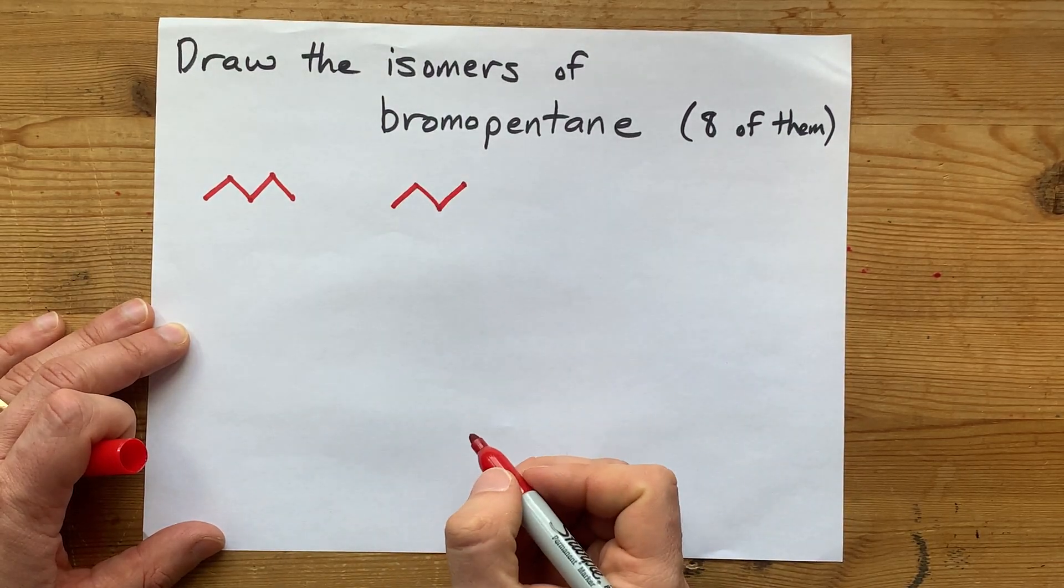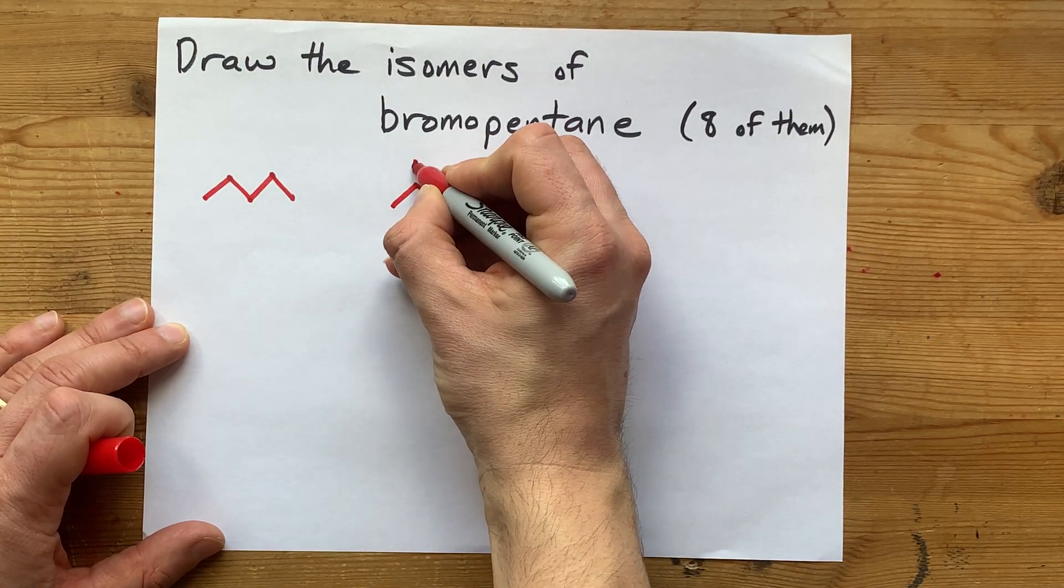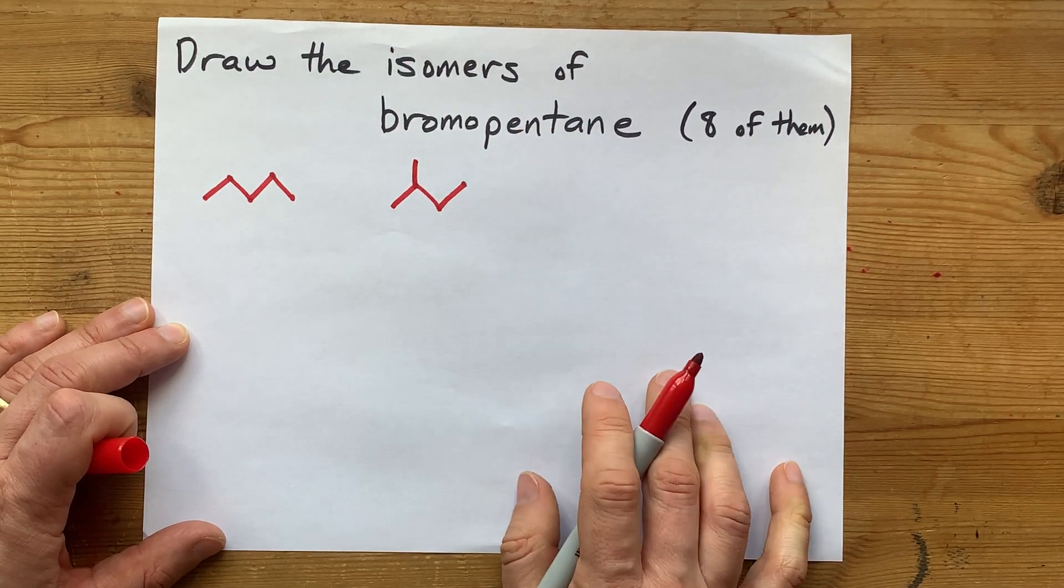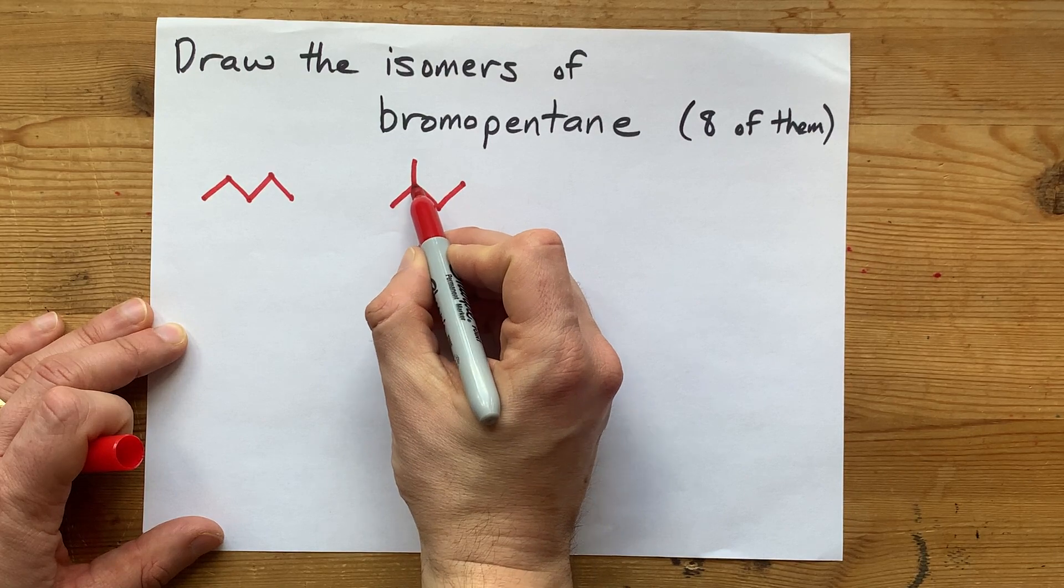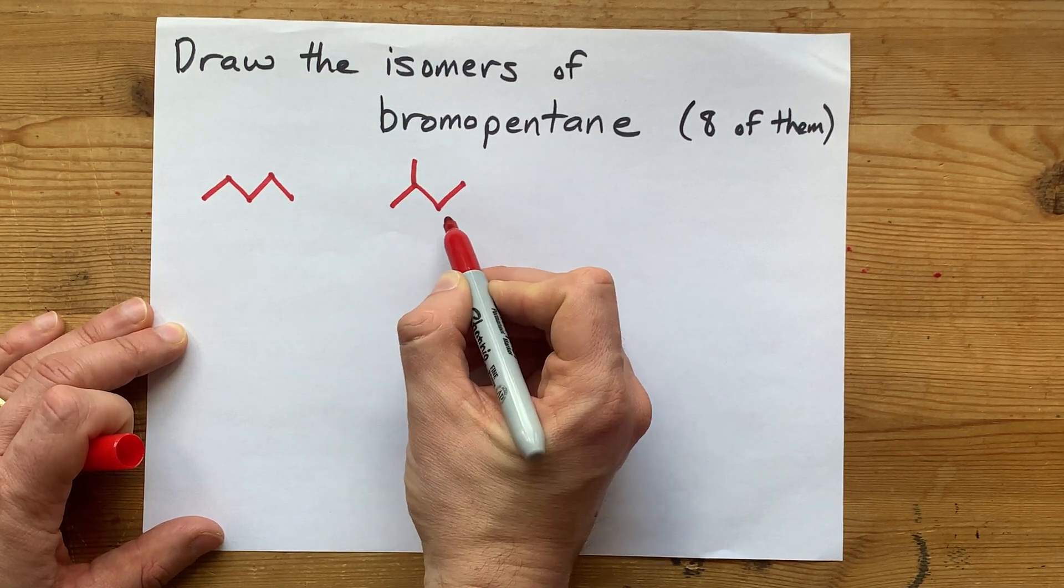Five carbons in a row. What if it was only four carbons in a row, and then we had the extra carbon as a branch? Well, that's a possibility.